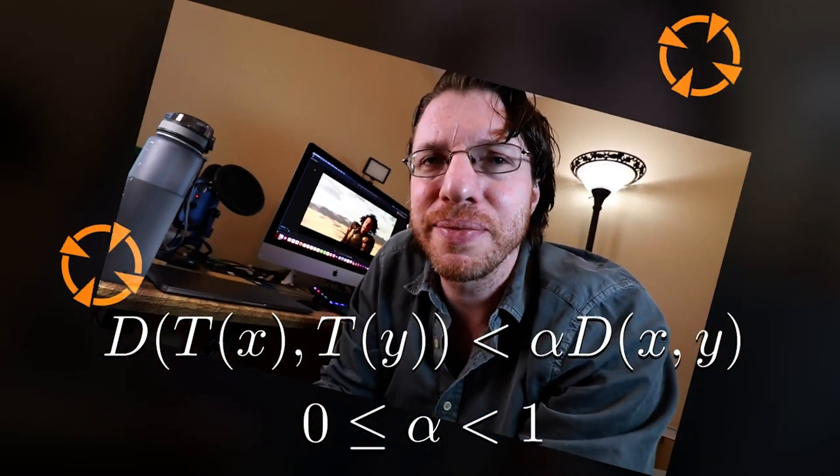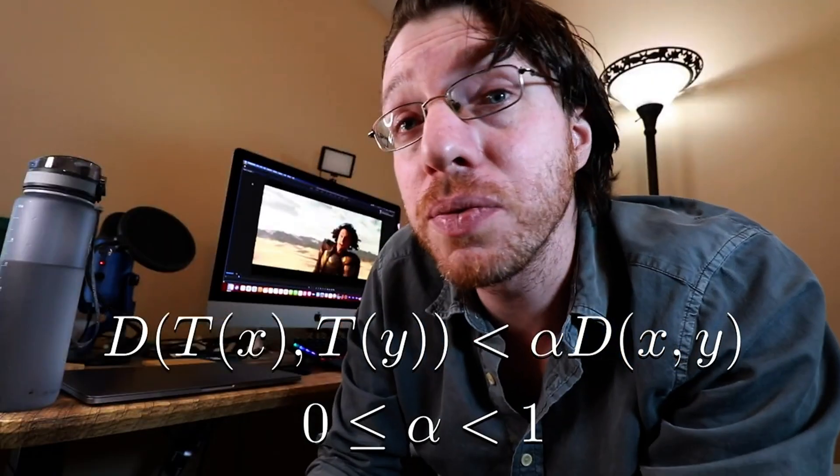In order to get a fractal, we're going to take mappings called contractive mappings. If you take a set of points and apply a contractive mapping, the image of those points is actually closer together — by some proportion less than one. You can keep applying this transformation over and over again, and it converges to what we call a fixed point. This fixed point, when used in the context of compact sets and iterated function systems, actually gives you a fractal.